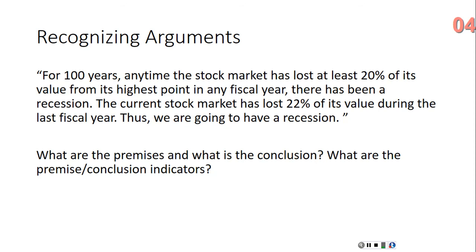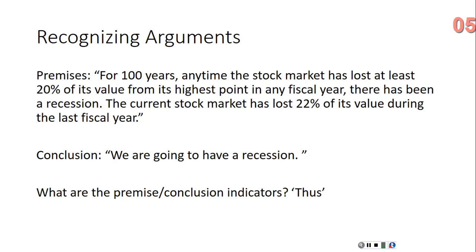Here's another example: 'For 100 years, any time the stock market has lost at least 20% of its value from its highest point in any fiscal year, there has been a recession. The current stock market has lost 22% of its value during the last fiscal year, thus we are going to have a recession.' The premises are the first two statements. The conclusion is 'we are going to have a recession.' The only indicator word is 'thus,' which indicates the conclusion.